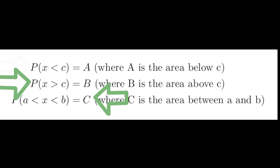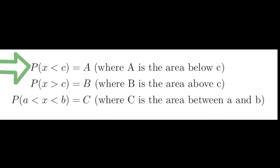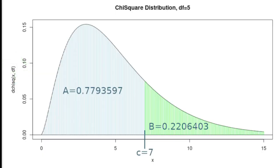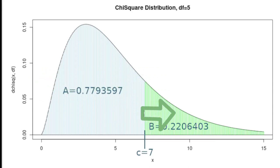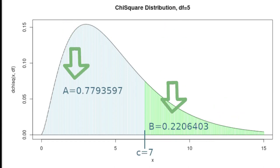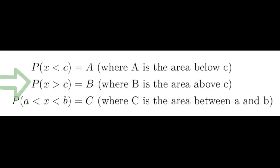Solving the other two types of problems requires understanding how to convert them to the first type. We're working with probability distributions, and one feature is that the total area under the curve is one. For example, in this chi-squared distribution at a c value of seven, there's an area below seven and an area above seven, and the total of those two areas is one — this is what allows us to solve the type two probability equation.